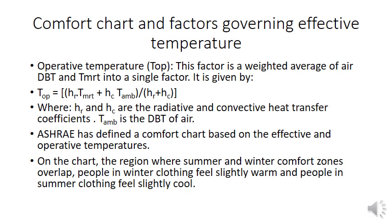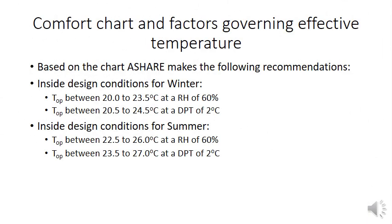Based on operative temperature, ASHRAE defined the comfort chart showing summer and winter comfort zones. For winter clothing, the comfort zone has an operative temperature between 20°C and 30.5°C with relative humidity of 60%; a more precise range is 20.5°C to 24.5°C at a dew point temperature of 2°C. For summer, the range is 22.5°C to 26°C. These define the inside design conditions for winter and summer, including the relative humidity and dew point constraints.